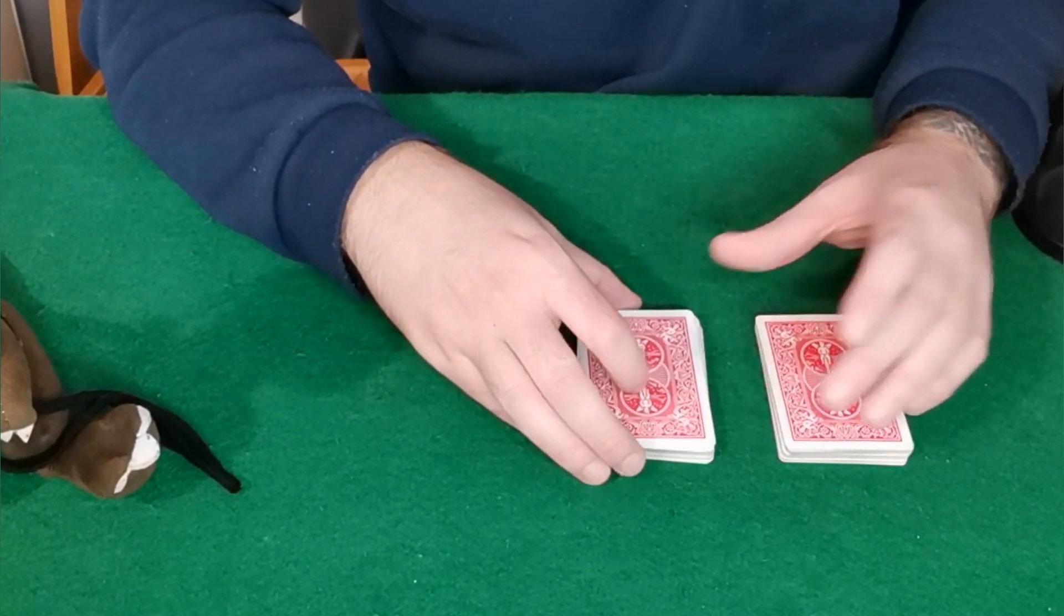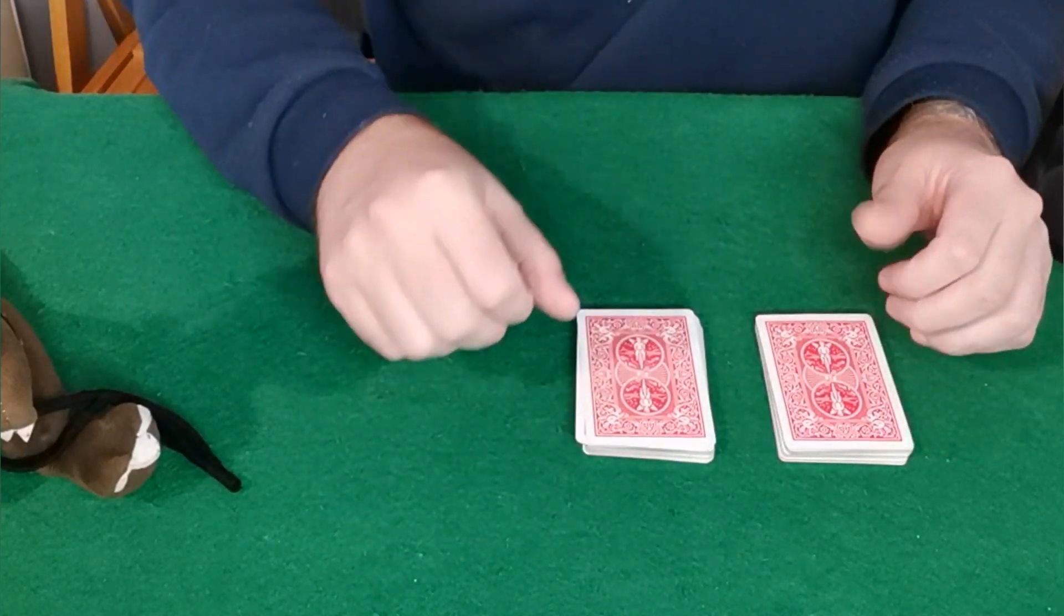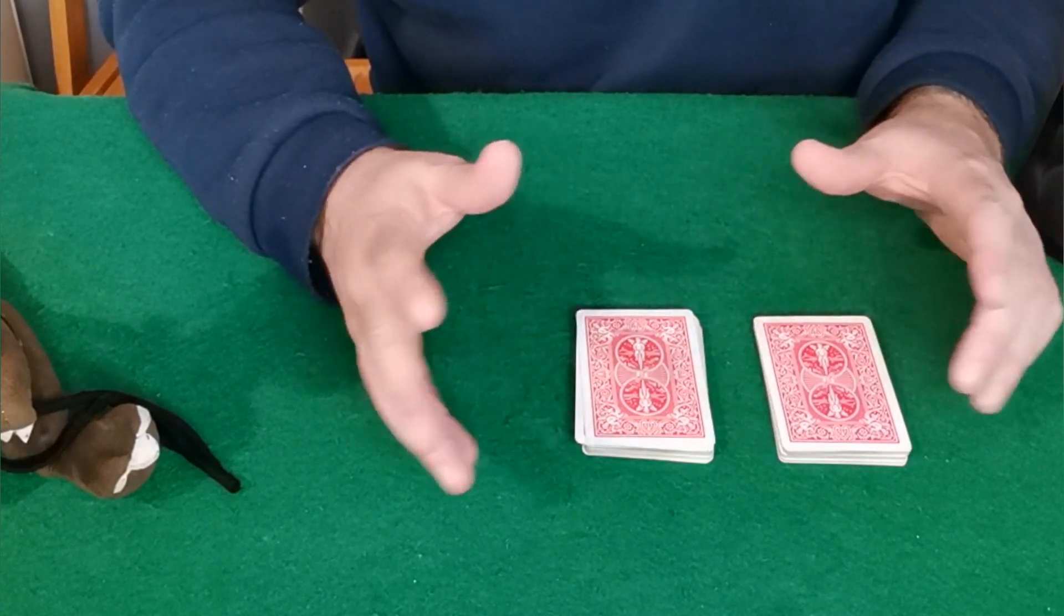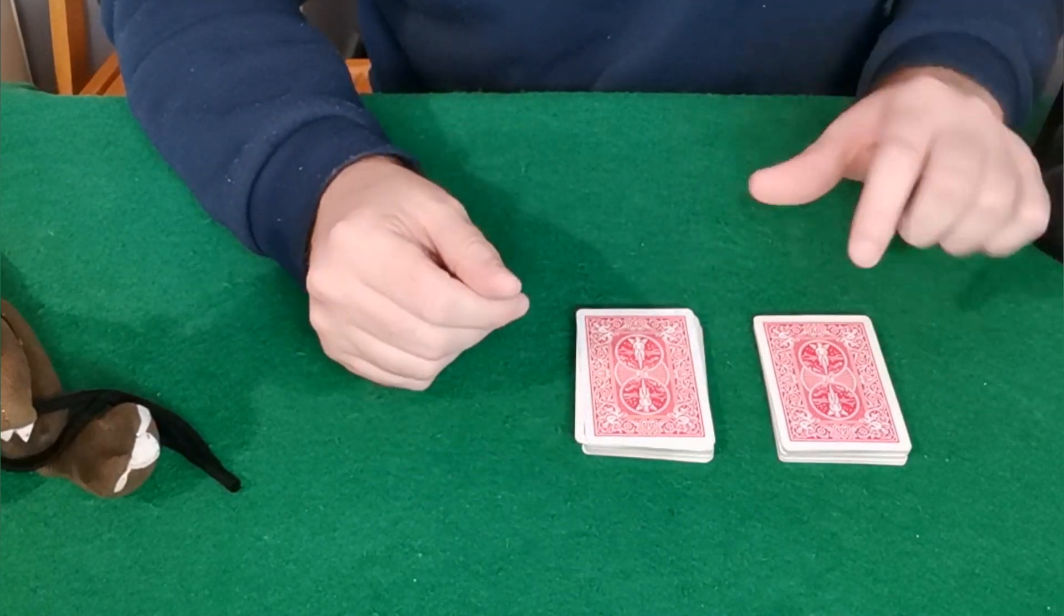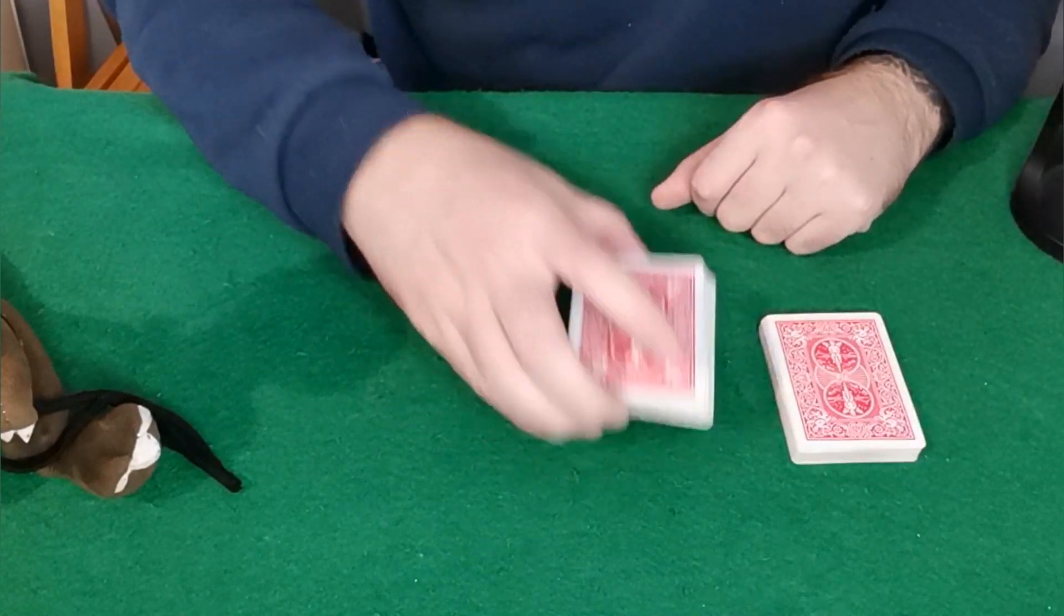Now the key to magician's choice is all about your wording. You don't want to say which one of these two packs do you choose. You just say which one of these two piles. If they say this one, you never said which one must I eliminate or which one must I keep. If they say this one, you just eliminate this one. And if they say this one, you just take this one.